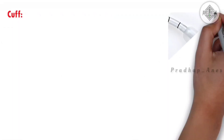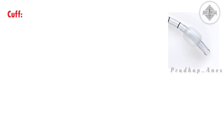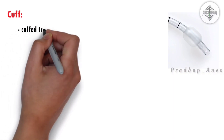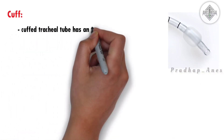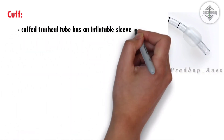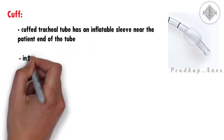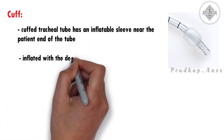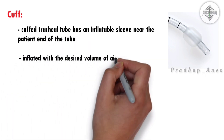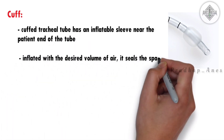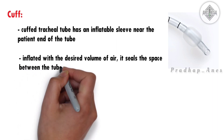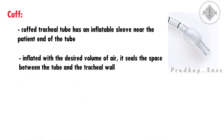Cuff. A cuffed tracheal tube has an inflatable sleeve near the patient end of the tube. When this cuff is inflated with the desired volume of air, it seals the space between the tube and the tracheal wall.